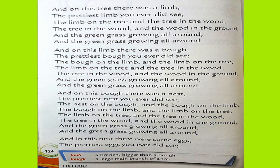And on this limb there was a nest, the prettiest nest you ever did see, the nest on the limb and the limb on the tree, the tree in the wood and the wood in the ground, and the green grass growing all around, and the green grass growing all around.